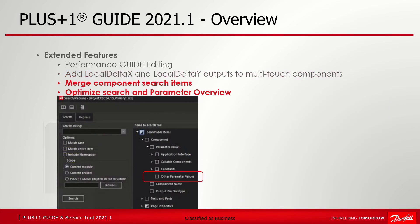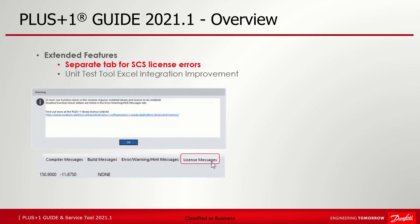Merge component search items and optimize search and parameter overview: the searchable items tree in the Guide search dialog has been restructured and grouped, and some minor changes have been done for faster search and faster opening of parameter overview. For the separate tab for SCS license errors: previously the license error showed up in the compile error tab. Sometimes you were only able to read one of them, and to avoid this conflict an additional tab has been added called license messages. This eliminates situations where license errors and compile errors both needed to show content in the error tab at the same time.